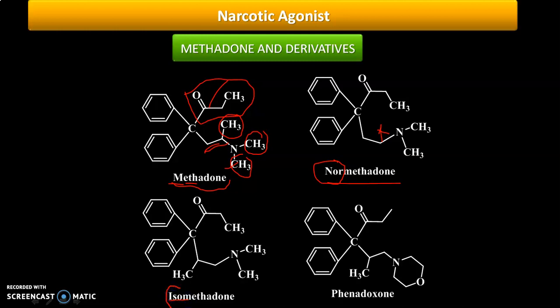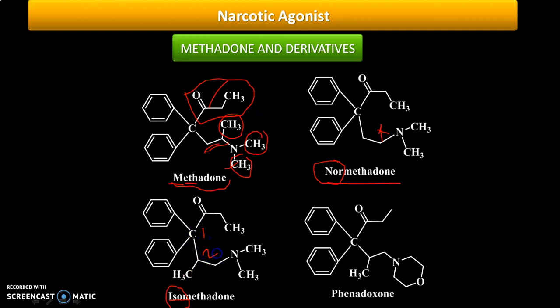The next compound is isomethadone. The prefix 'iso' indicates substitution at carbon number two. If you count the numbering starting from carbon one, carbon two has a methyl group at that position — that is why the name of this compound is isomethadone.